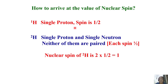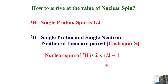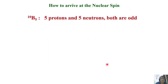Now let us take deuterium. It has a single proton and a single neutron. Neither are paired — each of them are unpaired, with each having spin one-half. Combining them, the total nuclear spin of deuterium is 2 × ½ = 1. So the spin of deuterium is one.